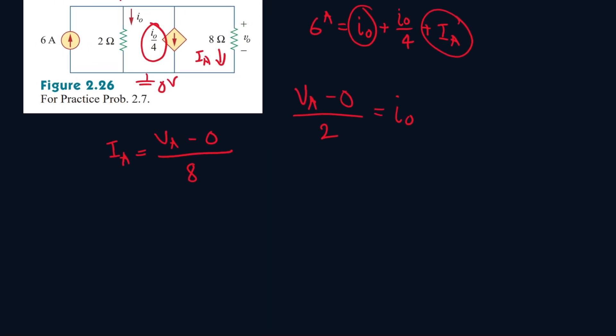So it will be 6 amps equals VA over 2 plus VA over 2 over 4. And that's just VA over 8 plus VA over 8 as well.